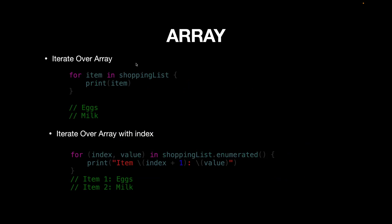To iterate over an array, simply write: for item in shoppingList, and this will print all items in the shopping list. Since we removed the last element, we have only two items. If you want to iterate with the index value, use the enumerated() function — shoppingList.enumerated() returns both the index and value of each item, so you can print something like "Item 1: eggs" and "Item 2: milk".